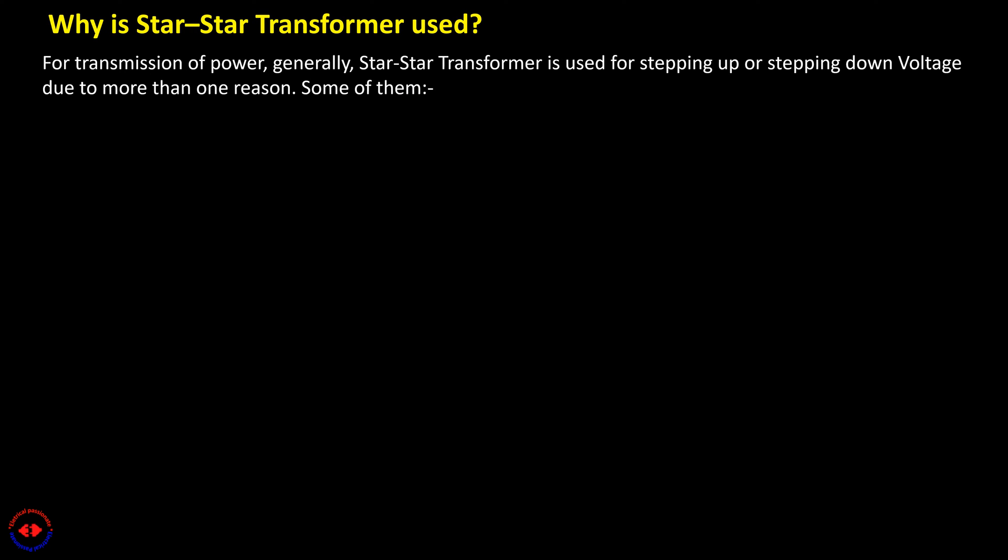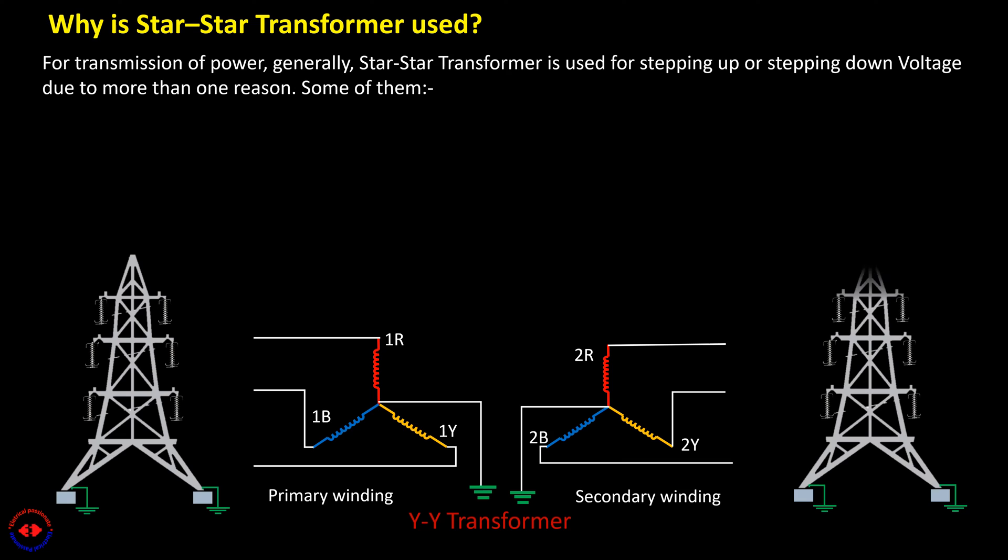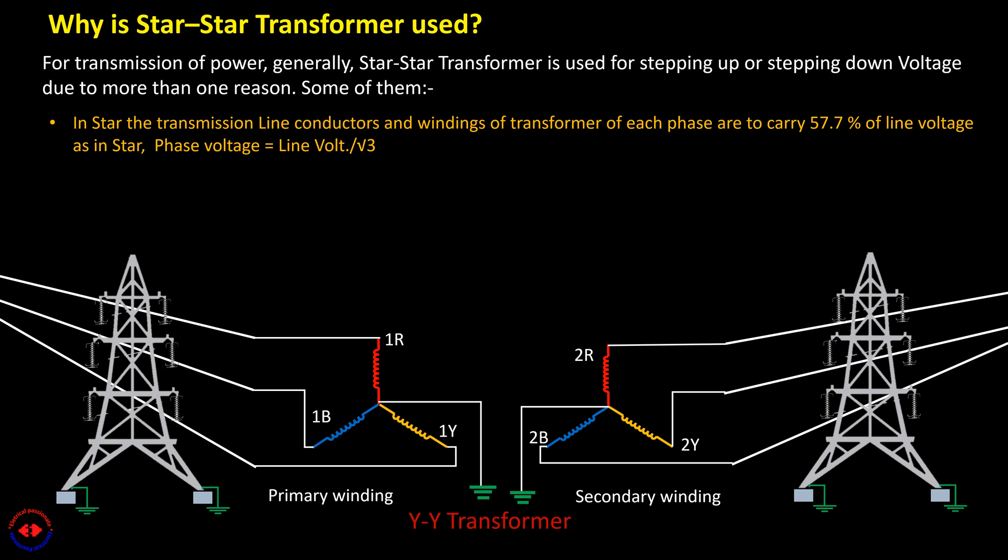For transmission of power, generally, star-star transformer is used for stepping up or stepping down voltage due to more than one reason. In star, the transmission line conductors and windings of transformer of each phase are to carry 57.7% of the line voltage, as in star, phase voltage is equal to line voltage by root 3.